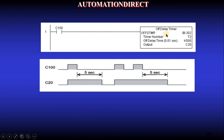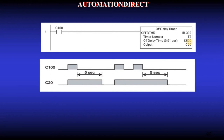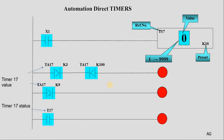In Automation Direct, the off-delay timer works differently. Your enable signal C100 goes on, and immediately your output goes on. When the enable goes off, the output stays on for the preset period (500, which is 50 seconds) after the enable disappears. This is like your car door light: you open the door, the light goes on; you close the door, the light stays on for five seconds and then turns off.